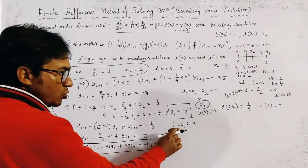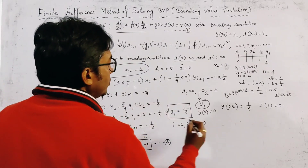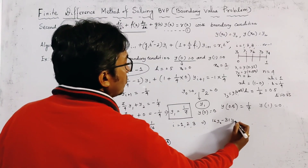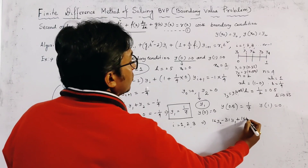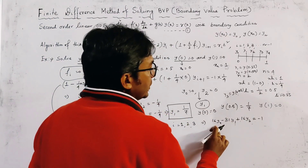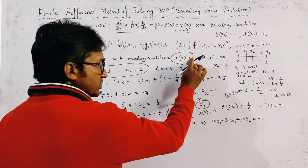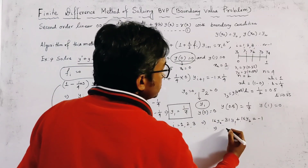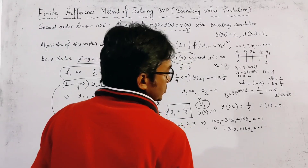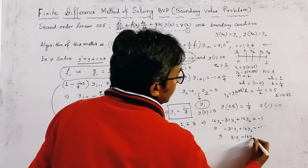To find the three unknowns, we write three simultaneous equations. Putting i = 1 in relation (A): 16y₀ − 31y₁ + 16y₂ = −1. Substituting y₀ = 0 gives: −31y₁ + 16y₂ = −1, or equivalently 31y₁ − 16y₂ = 1. This is the first equation.